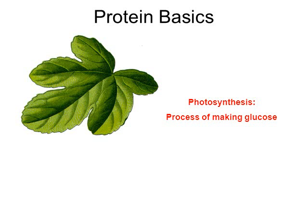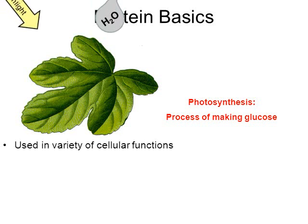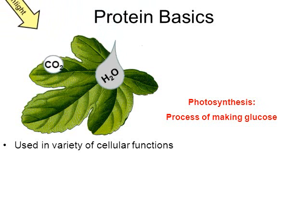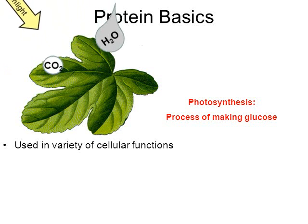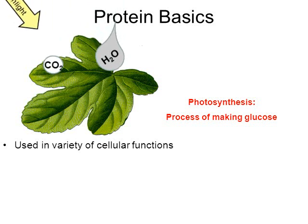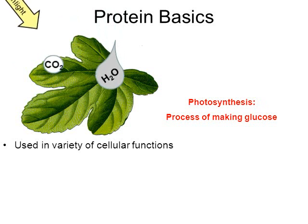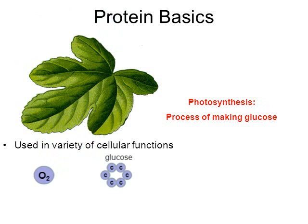A few basics first about proteins. Proteins are used in a wide variety of cellular functions. Later in the school year, we're going to go into photosynthesis in more detail. Photosynthesis requires three basic reactants: sunlight, carbon dioxide, and water. Through photosynthesis, we create oxygen and glucose. But in order to make oxygen and glucose, very special proteins are required along the way.